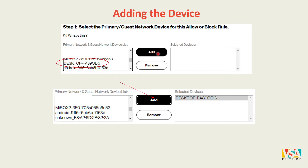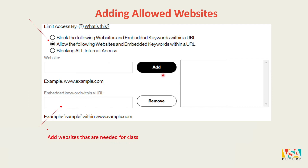Once you have identified the name of your device, select it, click 'Add,' and it will become one of your selected devices. Then click 'Allow the following websites and embedded keywords within a URL.' This blocks every other website except the ones you allow, so instead of blocking YouTube and all their games individually, you can simply choose what sites they are only allowed to visit by typing in the keyword.